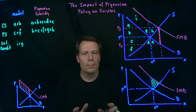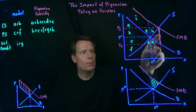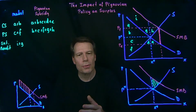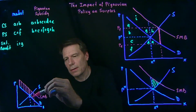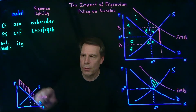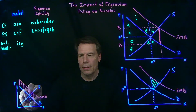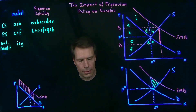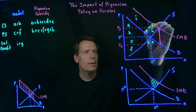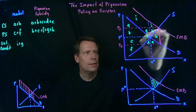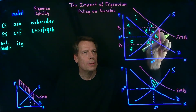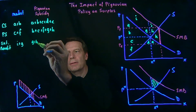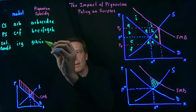When we impose the Pigouvian subsidy, we're producing a larger quantity, so we get additional benefits to non-market participants. Now we have the area between the social marginal benefit curve and the demand curve up to the quantity produced under the subsidy. This includes areas I, G, H, J, and K — so the externality benefit under the subsidy is G plus H plus I plus J plus K.